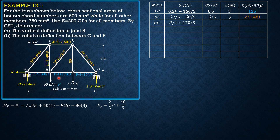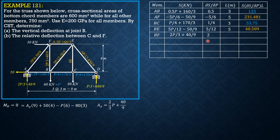Member BC: S equals P over 4 plus 170 over 3, partial derivative is 1/4, length is 3 m, product with P equal to 60 is 53.75. Member BE: S equals 5P over 12 minus 50 over 9, partial derivative is 5 over 12, length is 5 m, product with P equal to 60 is 40.509. Member BF: S equals two-thirds P plus 40 over 9, partial derivative is 2/3, length is 4 m, product with P equal to 60 is 118.519.